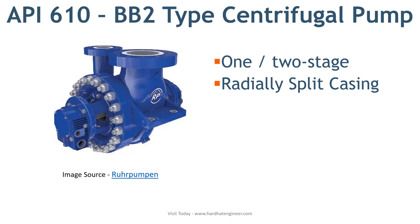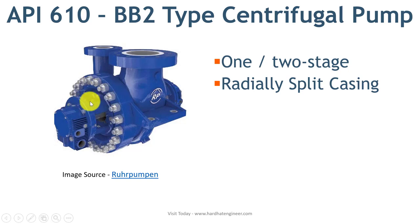Next is BB2 type pump. The difference between BB1 and BB2 is the way the casing is split. In BB2, the casing is radially split, whereas in BB1 it is axial split type.